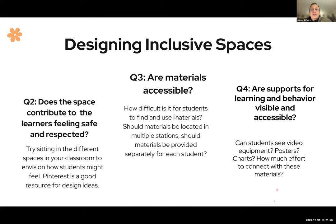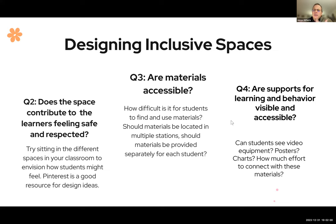How difficult is it for students to find and use materials? Should materials be located in multiple stations? Should they be provided separately for each student? In the science room, we cleared out some cabinets with glass doors so students can see through them, and put the most-used materials inside so they can see where things go and have quick access. Everything needs to be visible and accessible when designing and organizing a classroom.